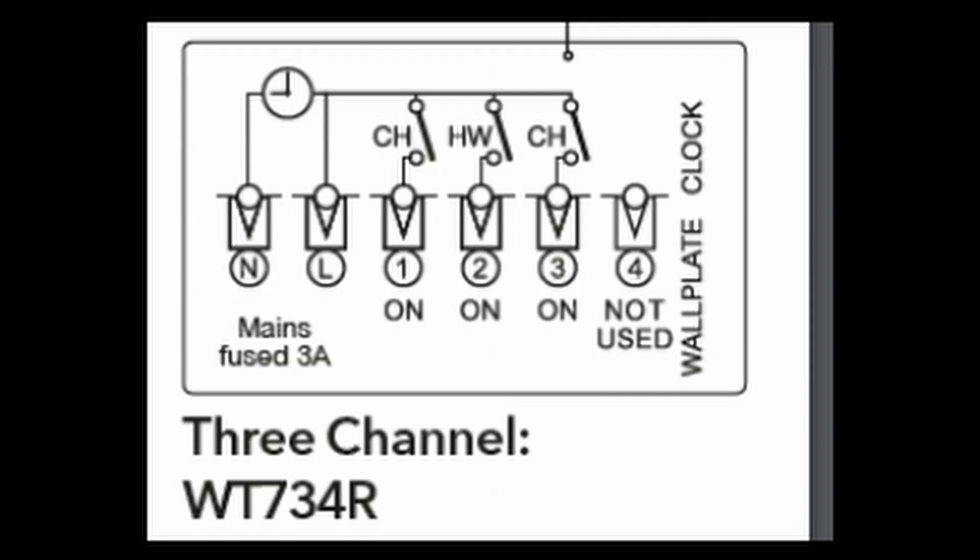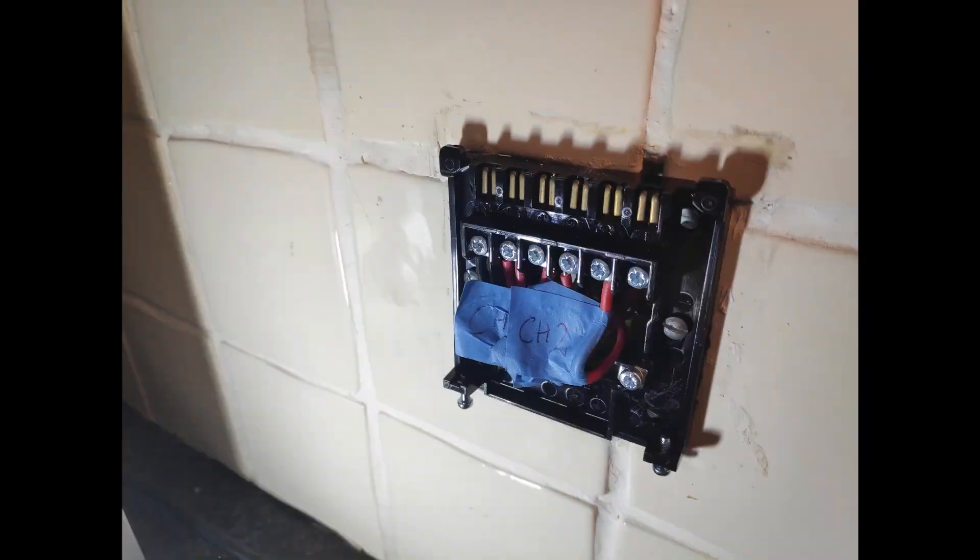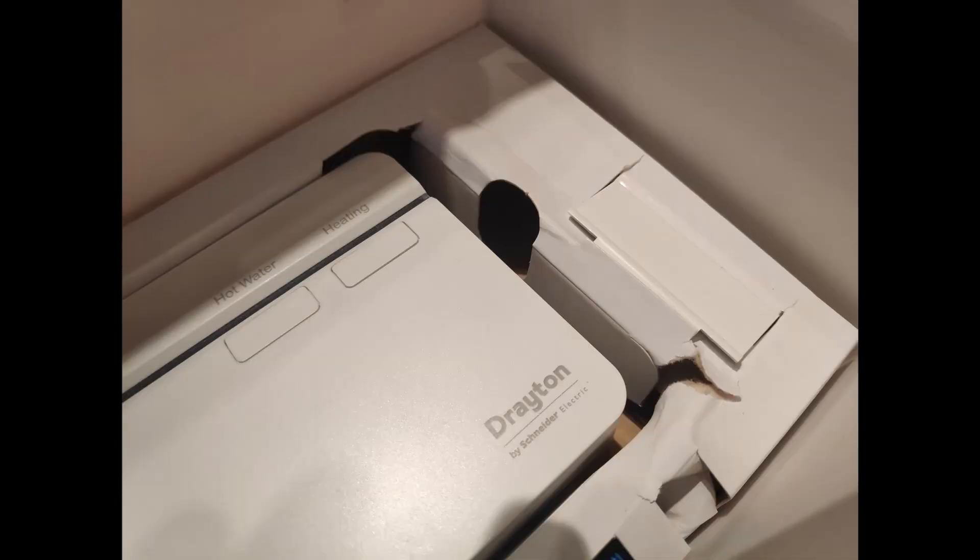So all I have to do now is check the instructions on the new Drayton system and select the appropriate set of instructions here. I've got the three channel system so as you can see here there's a neutral, a live, and then I have three channels which are labeled as on signals for one, two and three. So I have to take each of the three wires from the old wall plate and transfer those across now onto the new one that Drayton have supplied.